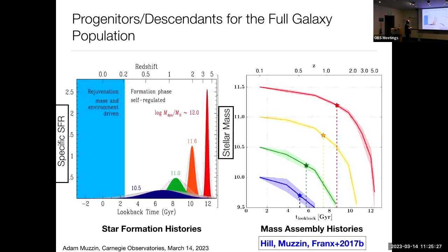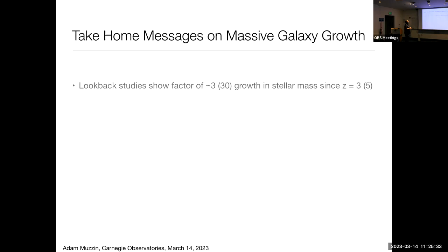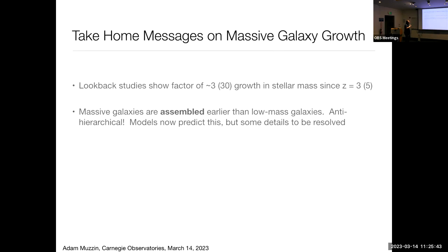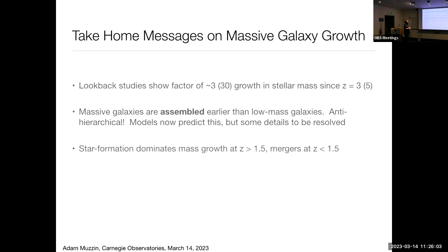Take-home messages from these lookback studies: we see a lot of growth in really massive galaxies like M87 since redshift 3 to 5. Massive galaxies are assembled earlier than low mass galaxies — the universe is anti-hierarchical in stellar mass. Models are actually doing a much better job of predicting this, though getting this precisely correct still has a huge amount of deficiencies in the details. And star formation dominates the mass growth at high redshift, while it's probably mergers at low redshift for a galaxy like M87.